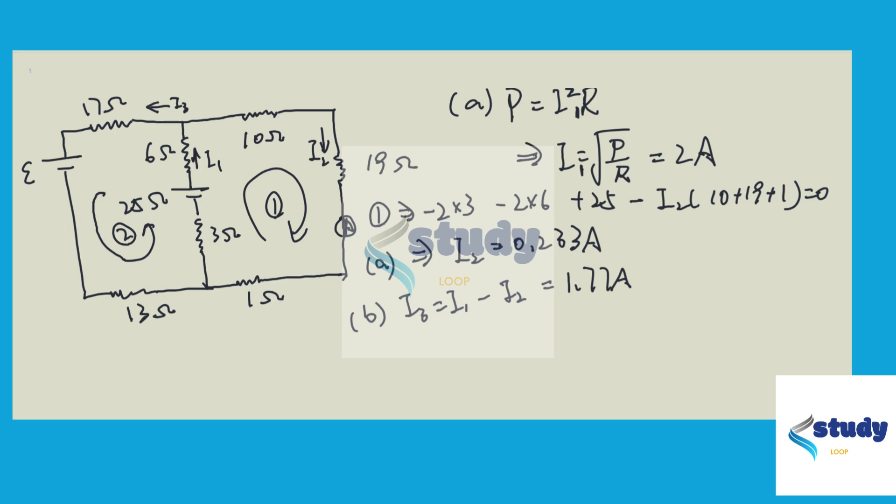So in loop 2, we can write negative 2 times 3 minus 2 times 6, these two resistors, plus 25, that's because of this battery, minus epsilon, the EMF, because it's in the opposite direction of the loop, and minus 1.77 times 13 plus 17. 13 plus 17 is these two resistors, equals zero.